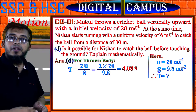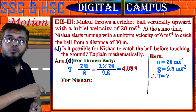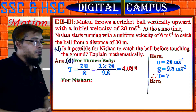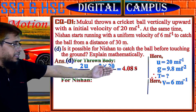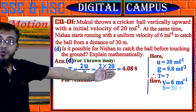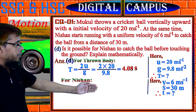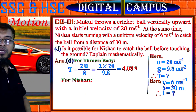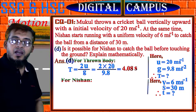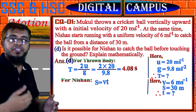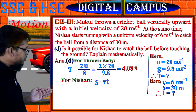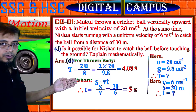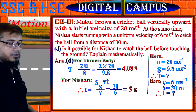Now I will find the time required for Nishan to reach the spot from a distance of 30 meter. The distance S = 30 meter and velocity of Nishan = 6 meter per second. Small t equals the time for Nishan to reach the spot where the ball will touch the ground. Using the formula S = Vt for uniform velocity, therefore t = S/V = 30/6, which gives 5 seconds.